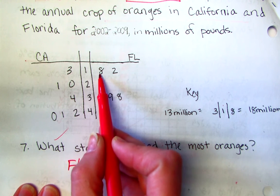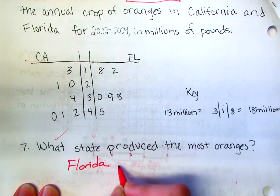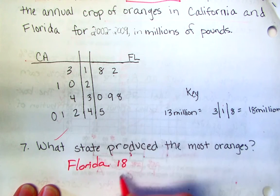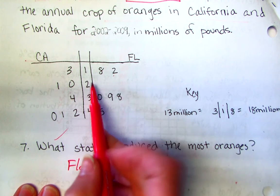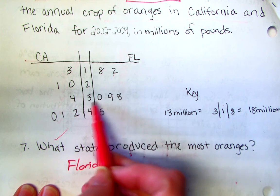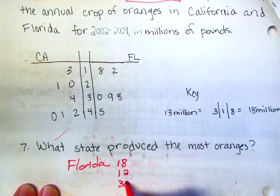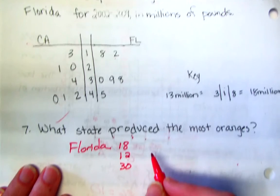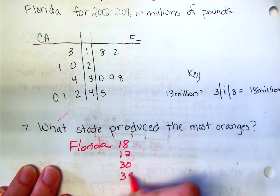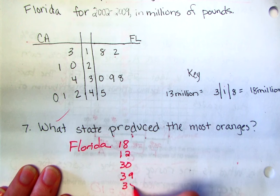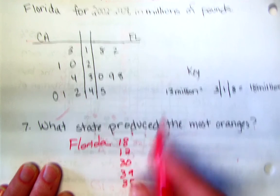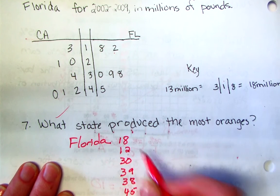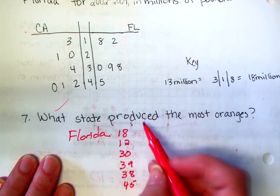So 1 8 is 18, then 1 2 is 12. There's nothing in the 20s. 3 0 is 30, 3 9 is 39, 3 8 is 38, and then 4 5 is my 45. I'm just gonna count again. It's always important to make sure you have all your data values.